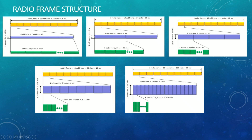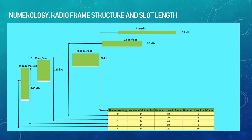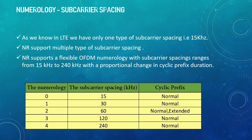The slot time changes from 1 ms to 0.5 ms. For 60 kilohertz subcarrier spacing, one subframe will have four slots each of 0.25 ms. Similarly for 120 kilohertz and 240 kilohertz subcarrier spacing, the slot duration decreases further. All three aspects — subcarrier spacing, numerology, radio frame structure, and slot length — are all interrelated.